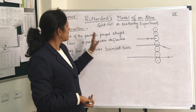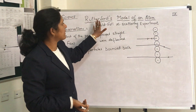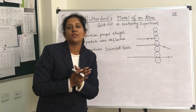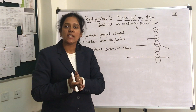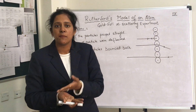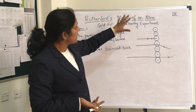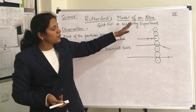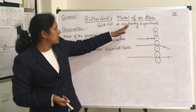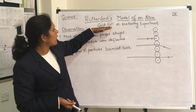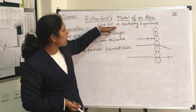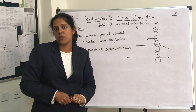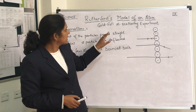Good morning students. Today my topic is Rutherford's model of an atom. As you know, different scientists have attempted to give the model of an atom, and Rutherford tried to give the model of an atom on the basis of the gold foil alpha scattering experiment. Now there are two things to consider.